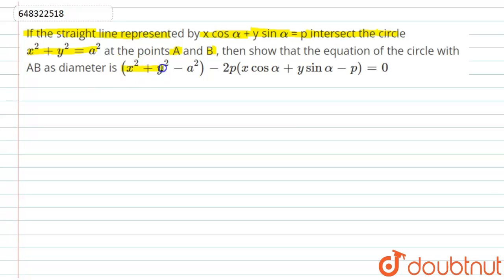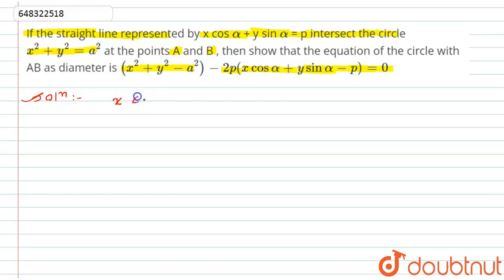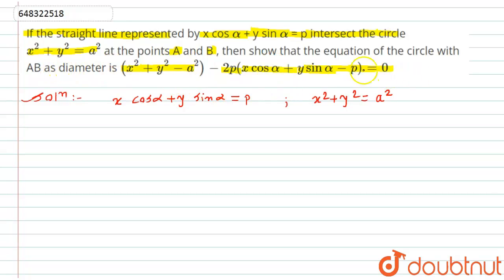The expression is x squared plus y squared minus a squared minus 2px cos alpha plus y sine alpha minus p equals 0. So let's see the solution. What is given in the question? We have two equations: one is the equation of a straight line, x cos alpha plus y sine alpha equals p, and the second is the equation of a circle, x squared plus y squared equals a squared. Both are intersecting each other, and we have to show that AB is a diameter of the circle.